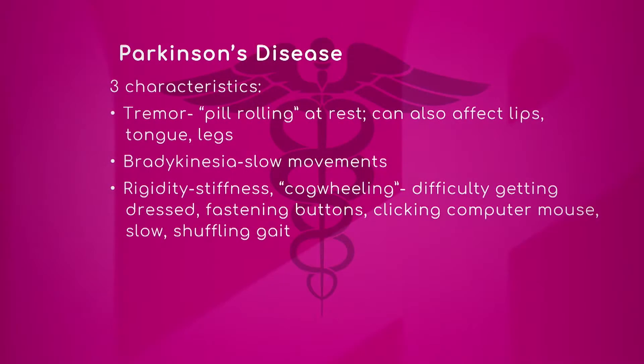Let's go through the three characteristics of Parkinson's disease — walk us through the list explaining what each characteristic is. The basic key here is that motor function is huge. We start out with first of all the pill rolling at rest — what is it?